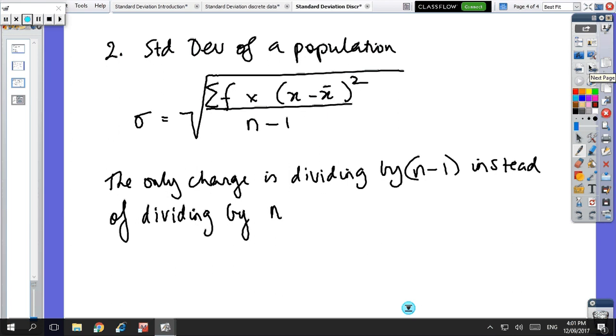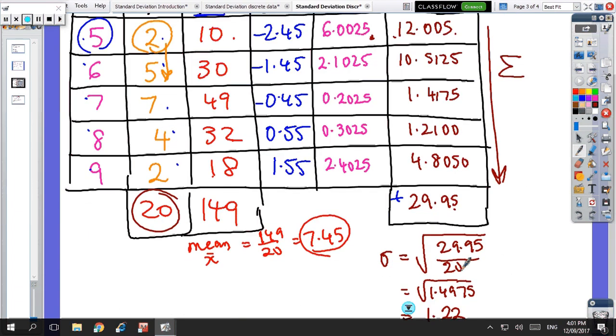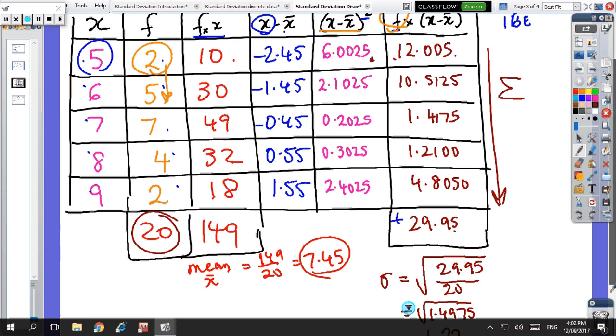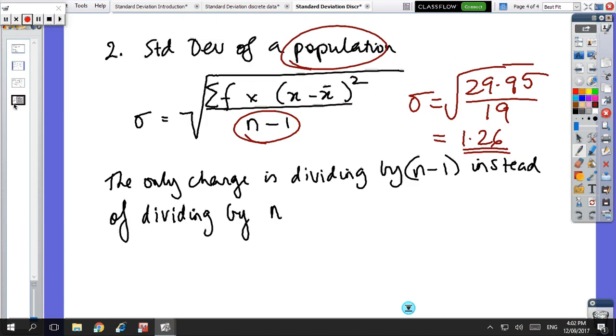So on this last slide, if we had to extend that to a population, all we do is we take that number, 29.95, and instead of dividing by 20, we just divide by 19. So you get a slightly different answer, but we're extending an answer from a sample to a population, so we can't be as accurate because we only took a sample of it. And square root answer, so you get 1.26. So there's just a slight difference. Here we had 1.22, and extending it to a population, we get 1.26. So it's just a slightly different measure because we're extending a sample to a population and we can't be as accurate.